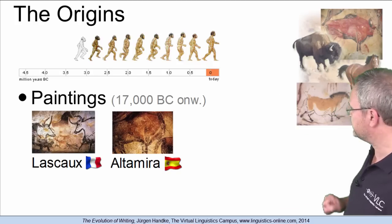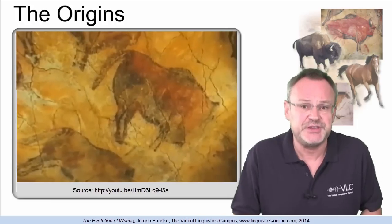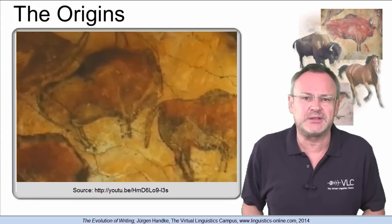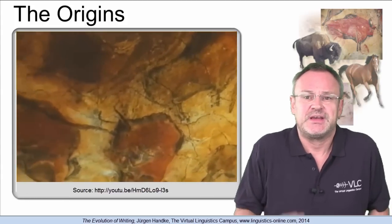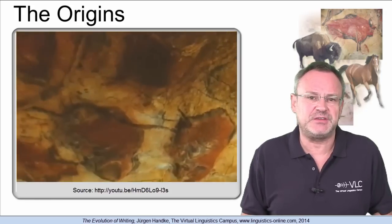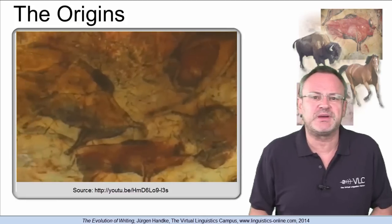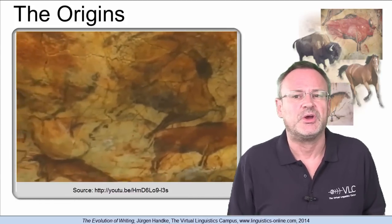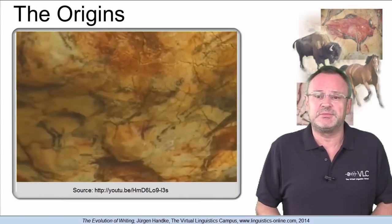Altamira is a cave in Spain famous for its upper paleolithic cave paintings featuring drawings and polychrome rock paintings of wild mammals and human hands. The world-famous feature of this cave is found on the ceiling: colored paintings mainly from the beginning of the Magdalenian period, about 15,000 years ago. Most paintings show bisons, but there are also other animals and some other figures in a simpler style.